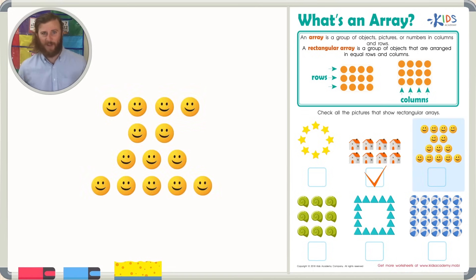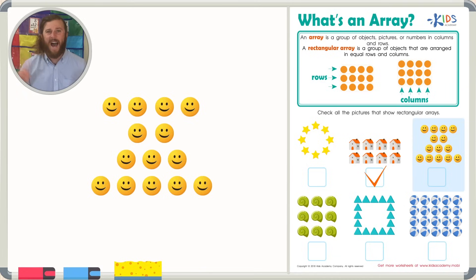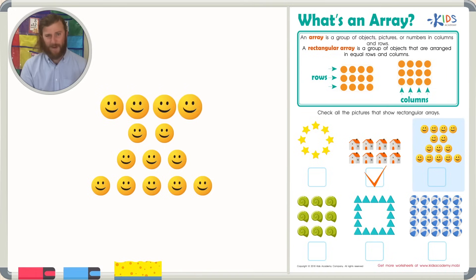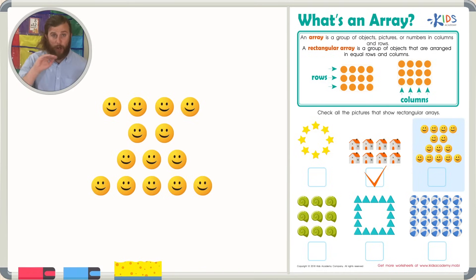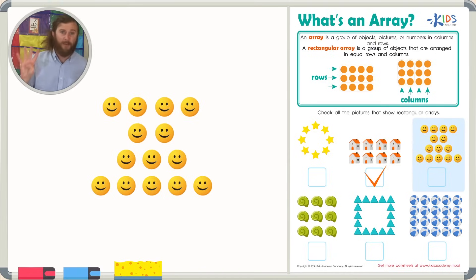Let's look at our next picture of smiley faces. In this picture, there is not an equal number in each row. In the first row there are four smiley faces, and in the second row there are only two smiley faces. For this to be an array, there would have to be four smiley faces in each row — and there's not. So, this isn't an array.